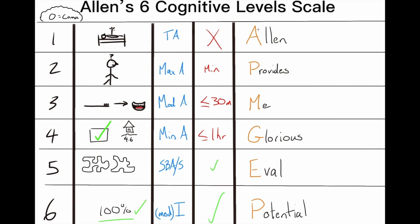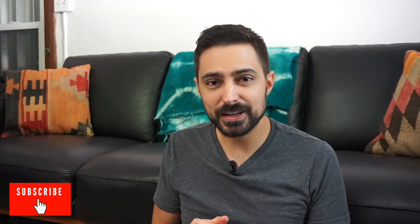Finally, we have our mnemonic: 'Allen provides me glorious eval potential' — which is 100% true and reflects why this scale is so helpful in occupational therapy. A stands for automatic, P for postural, M for manual, G for goal directed, E for exploratory, and P for planned actions. Hopefully this helps you remember the different levels. Thank you for joining me on the OT Minute. Don't leave without subscribing — we'd love to have you join the OT Minute community and we'll see you in the next video.